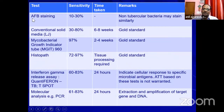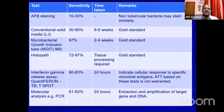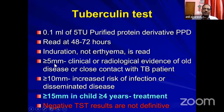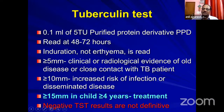Molecular analysis has increased both specificity and sensitivity for tuberculosis. Regarding the tuberculin test: it is the induration, not the erythema, which matters. Greater than or equal to 5 mm means prior exposure to tuberculosis. Greater than 10 mm indicates increased risk of infection. Greater than 5 mm in a child greater than 4 years requires TST follow-up. When tests are negative, they don't mean the patient is clear.